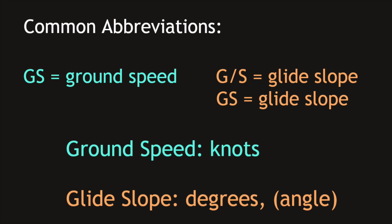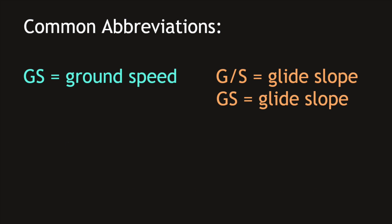Ground speed is given in knots, with very few exceptions where in some cases we may be presented with it in miles. Both of these units we are already very familiar with regarding units of speed. Since glide slope is always referring to an angle, it will be given in degrees. Now let's move on to the first question.